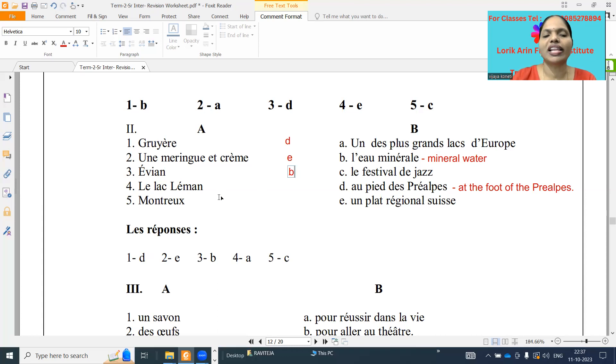Next one, le lac Léman. Le lac Léman is un de plus gros lac of Europe. One of the most biggest lakes of Europe. So what it is? Next one, question cinq, Montreux. Montreux is famous for le festival de jazz. So jazz festival, C it is. D'accord?